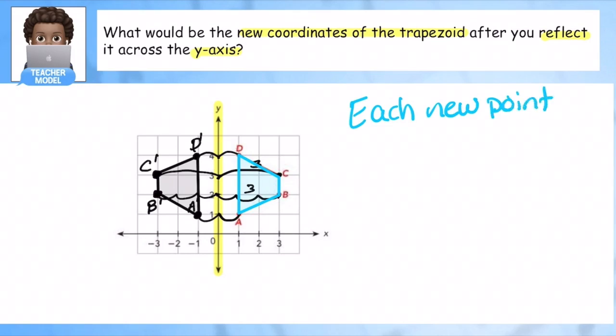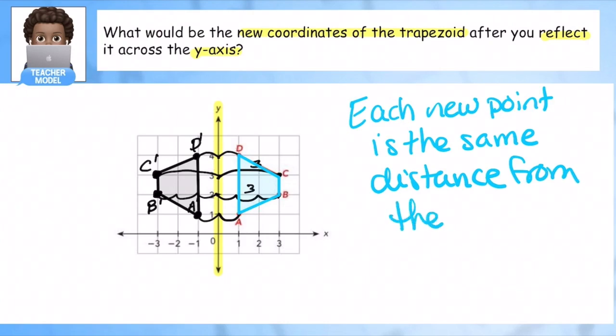And I'm putting this down. Each new point is the same distance from the line of reflection. Hit pause and jot this down into your notes.